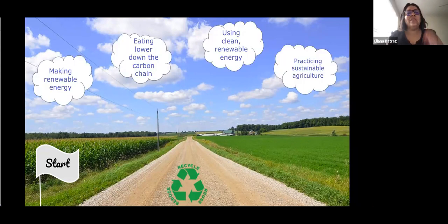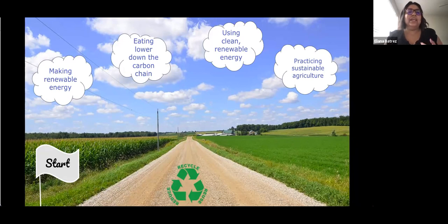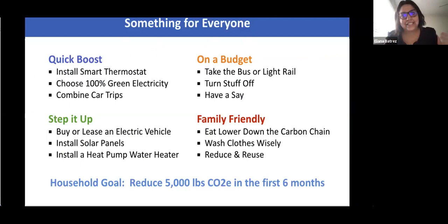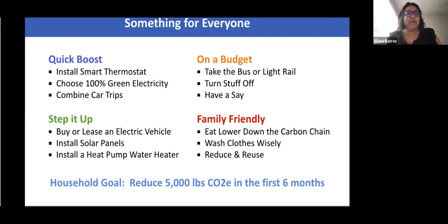Additionally, sustainable living might look like making and using clean, renewable energy to heat our homes and businesses and power our transportation. We can also eat less red meat and practice sustainable agriculture, both by considering the food miles and the effect of the carbon chain. These are some ways that you can start — examples from our challenge. Different categories give you an idea of the types of actions you can take, such as family-friendly actions like eating lower down the carbon chain, washing clothes wisely, and reducing and reusing.